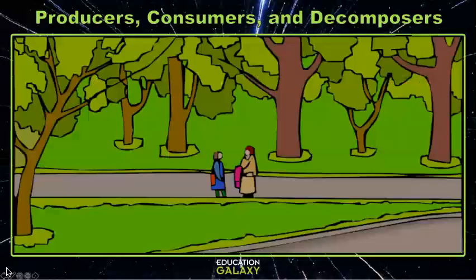Let's take a look at a local park to see producers, consumers, and decomposers interacting. Let's look for some producers. I see a lot of grass. Grass is a producer that makes its own energy from the sun using photosynthesis.